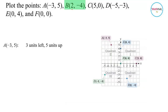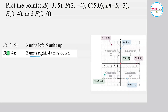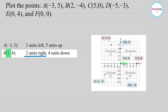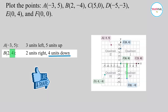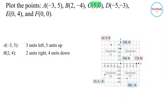To get point B, you have positive 2, negative 4 — meaning 2 units to the right, and then 4 units down. Starting from the origin, you go 2 units to the right and then 4 units down. That's how you get point B at 2, negative 4.